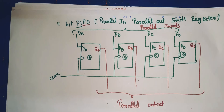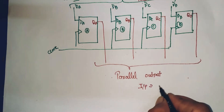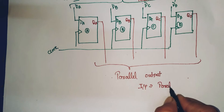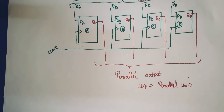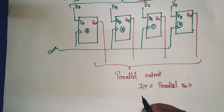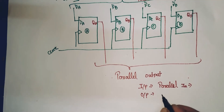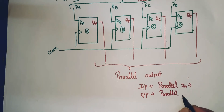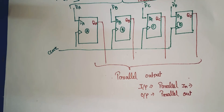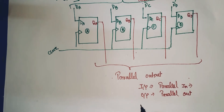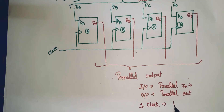The input data is parallel in — parallel in means simultaneously input is applied to all flip-flops — and the output is also parallel out, meaning output will be obtained simultaneously from all flip-flops. One clock pulse is required for loading.